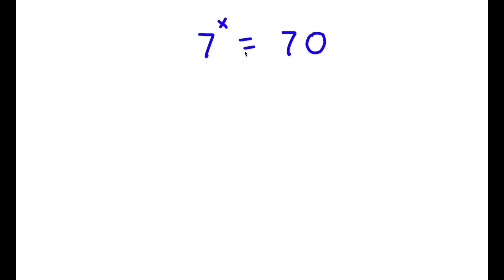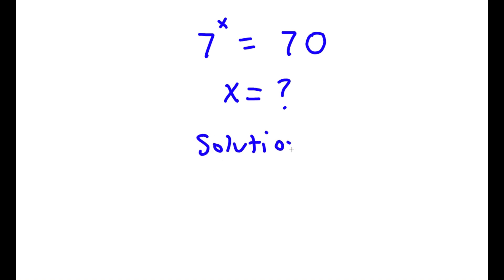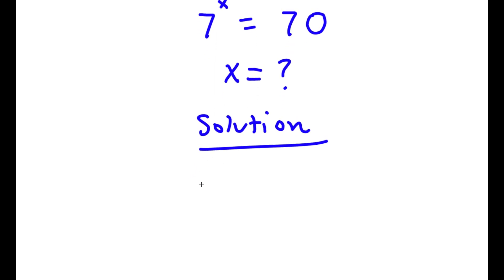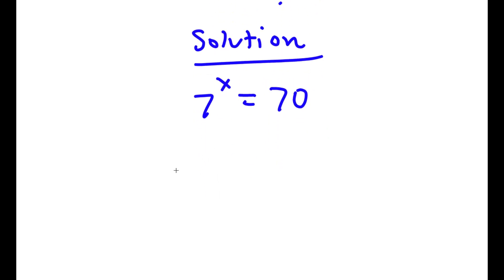Alright, so I have 7 to the power of x is equal to 70. I obviously want to find the value of x. So for my solution here, I'll start with 7 to the power of x is equal to 70, and now I'm going to take the log on both sides.